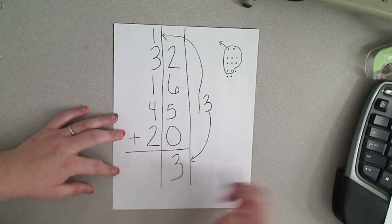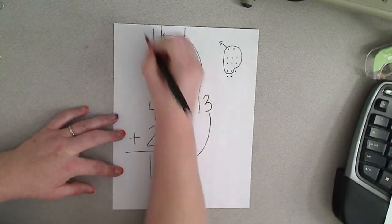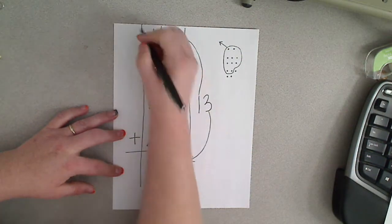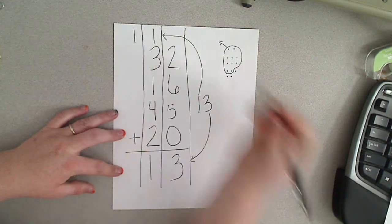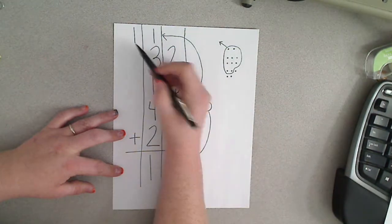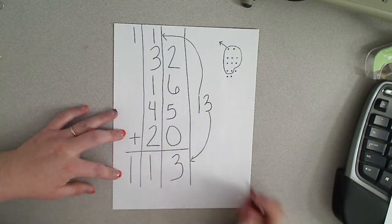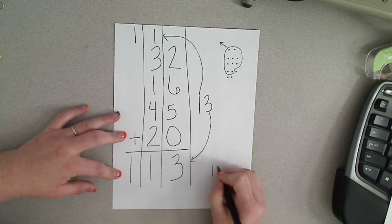So once again they're going to leave those ones and carry the tens next door. 1 plus nothing is 1. So the answer to this problem would be 113.